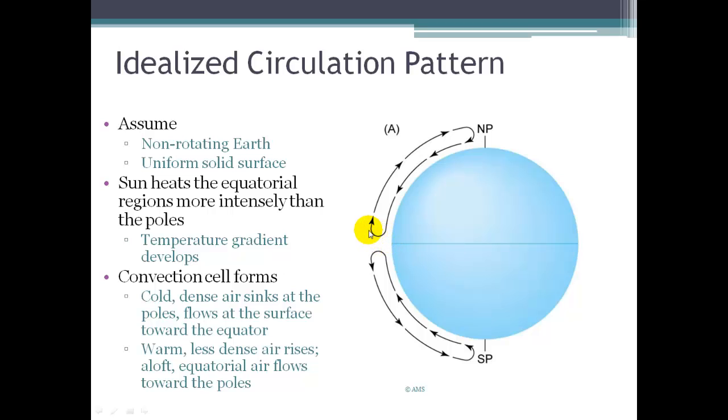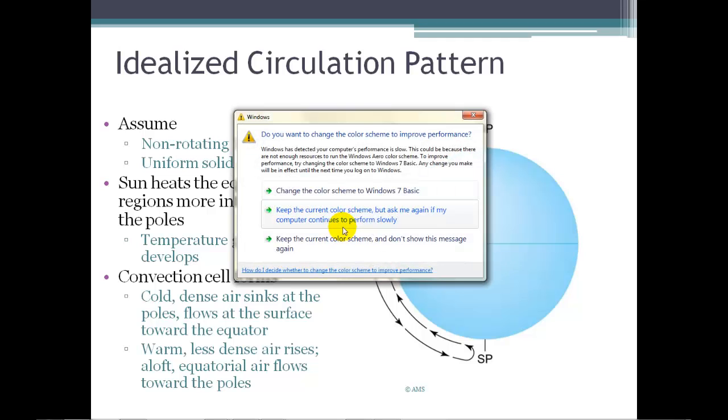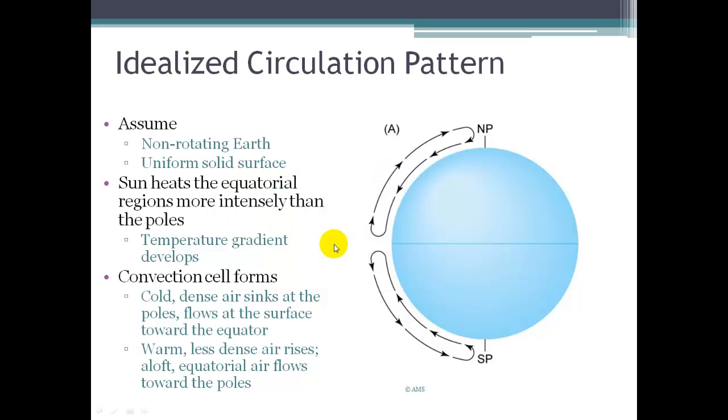So we have rising warm air and surface divergence here at the equator, and then at the poles we have sinking air. This type of circulation cell, as we'll see later in this chapter, is called a Hadley cell. But this is assuming a non-rotating Earth and a uniform solid surface which we don't have. Our Earth spins on its axis and we have a mixture of continents and seas that make things a little bit confusing.